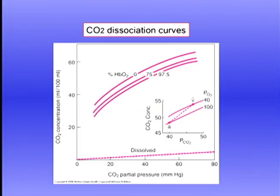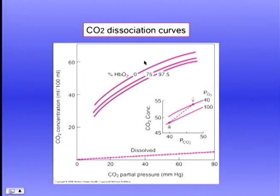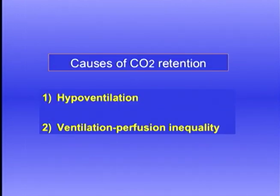Let's now turn to CO2. Looking at a PCO2 on an arterial blood gas report, we need to have the CO2 dissociation curves at the back of our mind. The critical point is that over the normal working range — a PCO2 of something like 40 to 50 — the dissociation curve is essentially straight, which is quite different from the oxygen dissociation curve. Also note that blood with a low arterial oxygen saturation can carry more CO2 for a given PCO2 than fully oxygenated blood, and dissolved CO2 is more important for CO2 transport than dissolved oxygen is for oxygen transport.